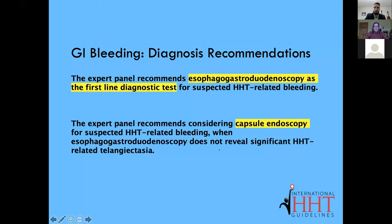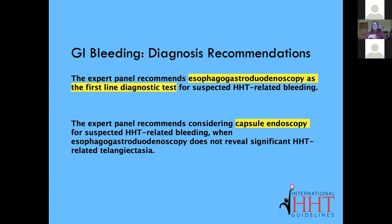This leads to the first recommendation from the 2020 HHT guidelines regarding GI bleeding — that an EGD, also called a gastroscopy or stomach scope, is recommended as the first-line diagnostic test for people with suspected HHT-related bleeding. EGD stands for esophagogastroduodenoscopy — when they put the camera in, they see the esophagus, the stomach, and the duodenum, which is the first part of the small bowel.